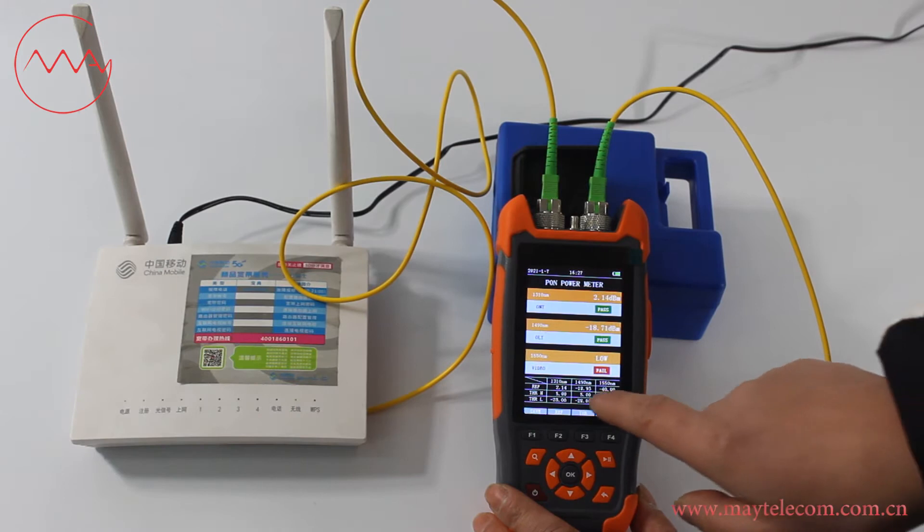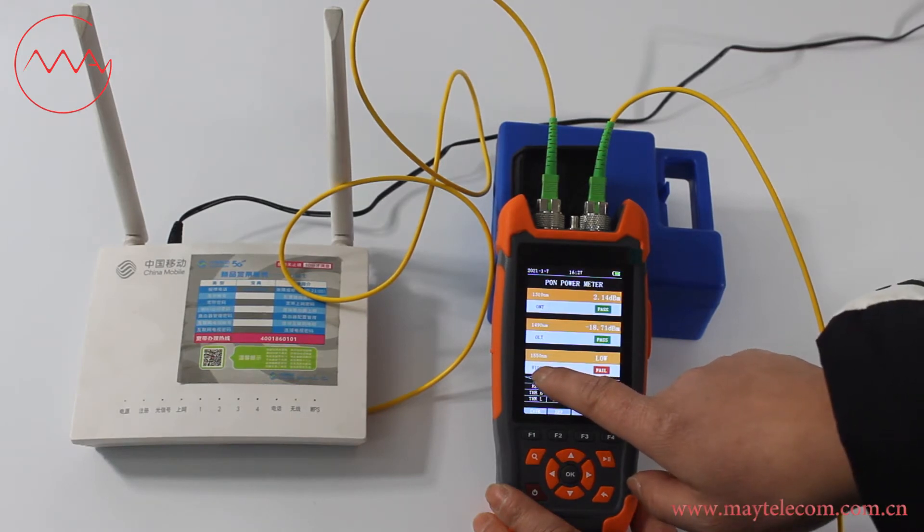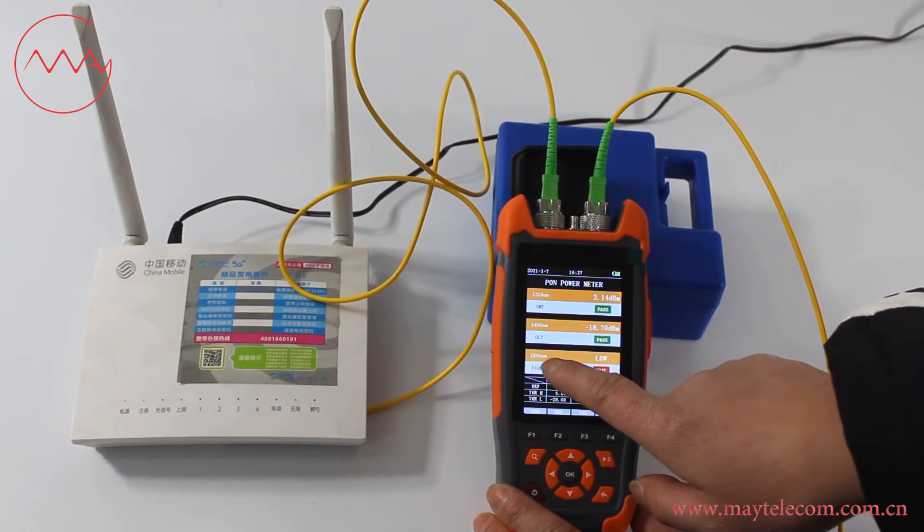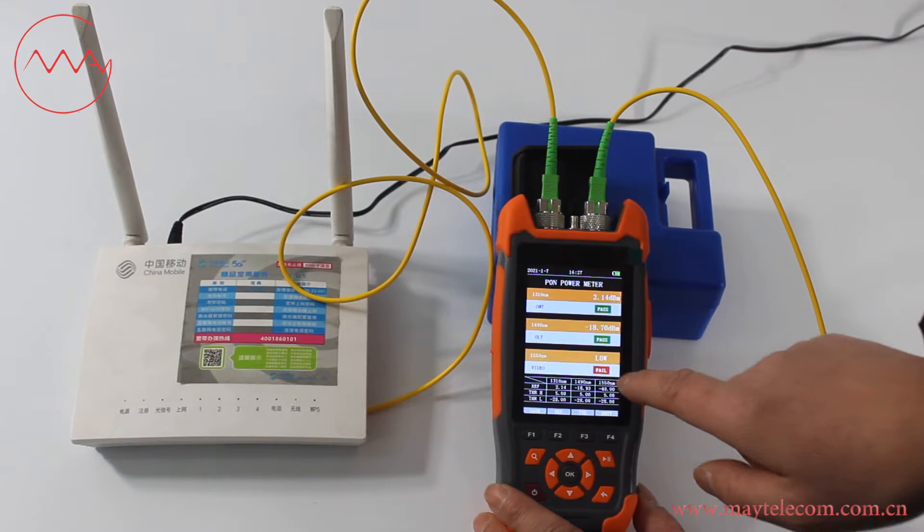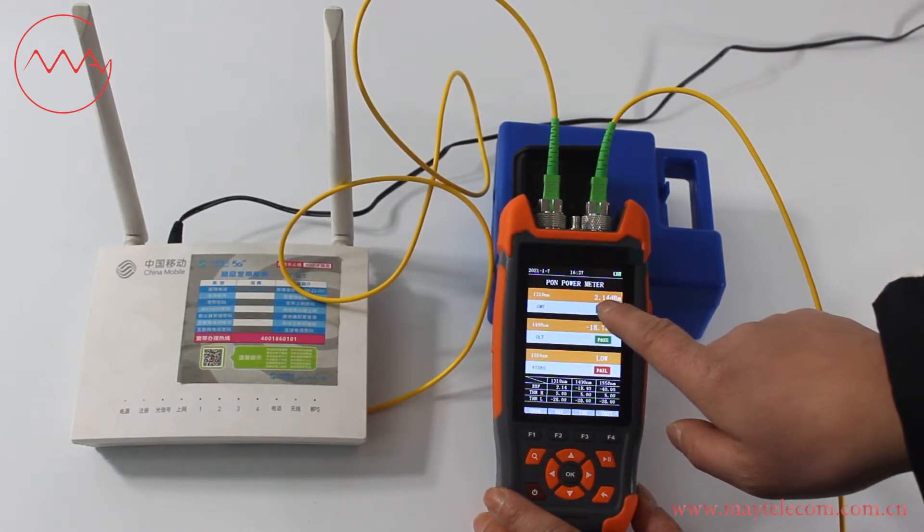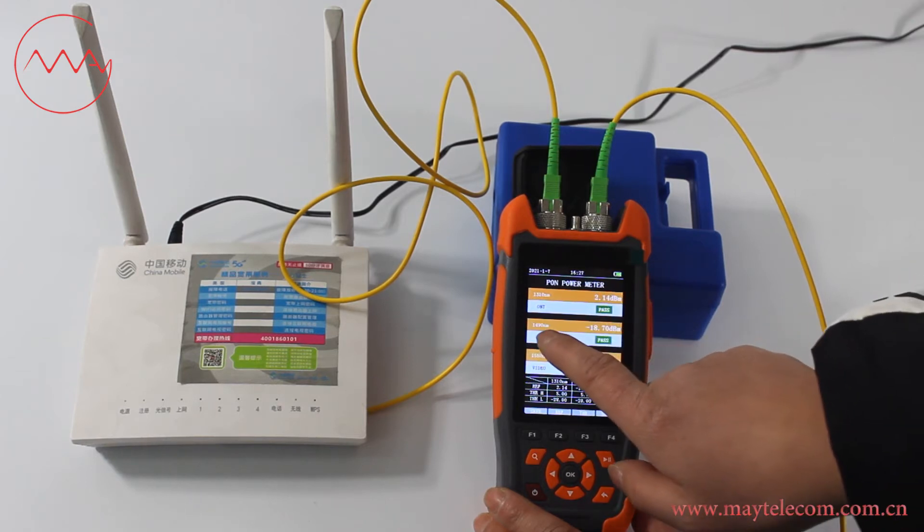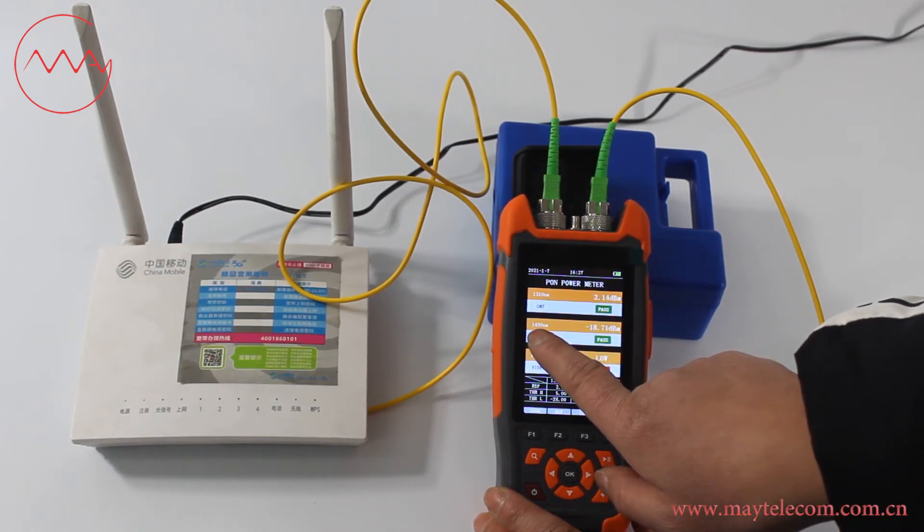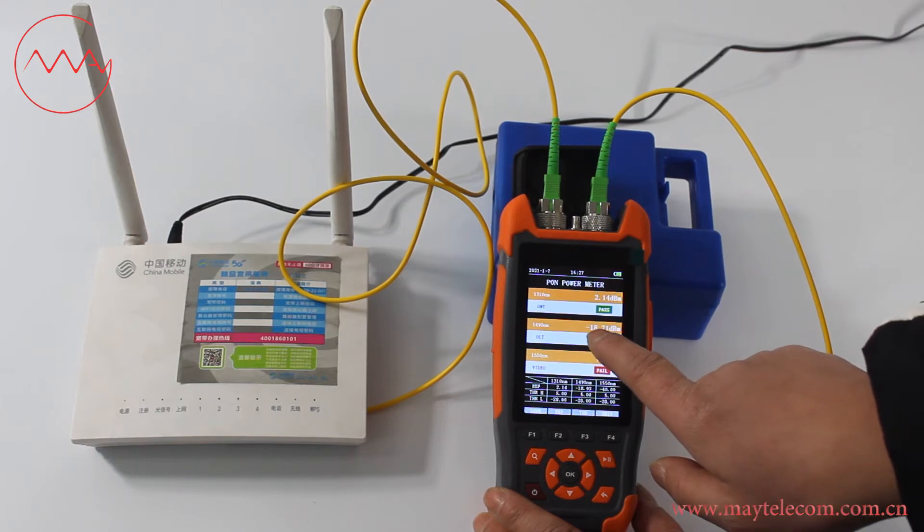In my pump network, there is no video service, so the optical power at 1550 shows low. The optical power at 1310 is 2.14 dBm. The optical power at 1490 is about -19 dBm.